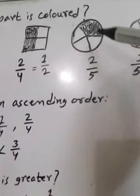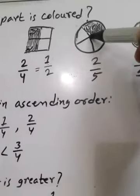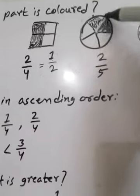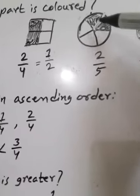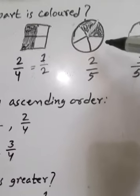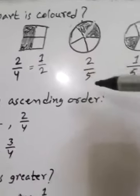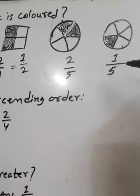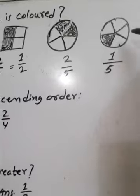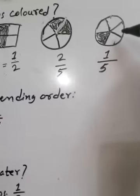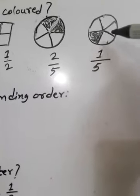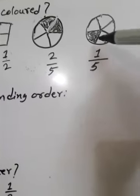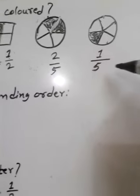This circle is divided into 5 parts and 2 parts are shaded — 2 by 5 parts shaded. This is divided into 5 parts and 1 part is shaded, so 1 by 5 part is shaded.